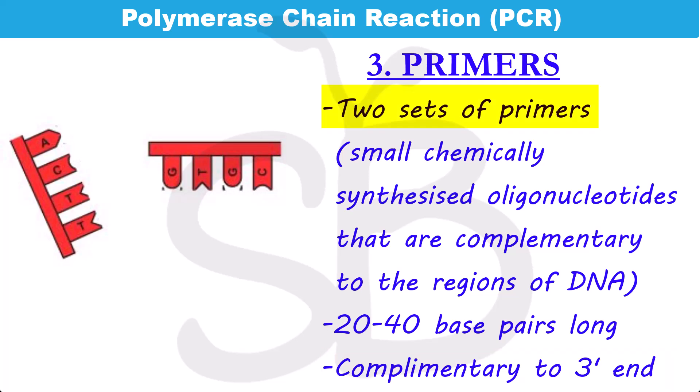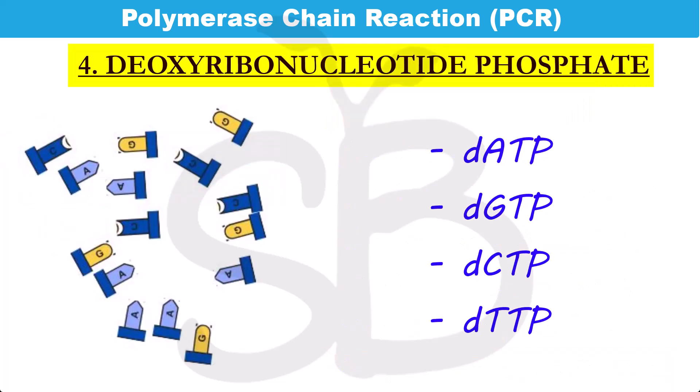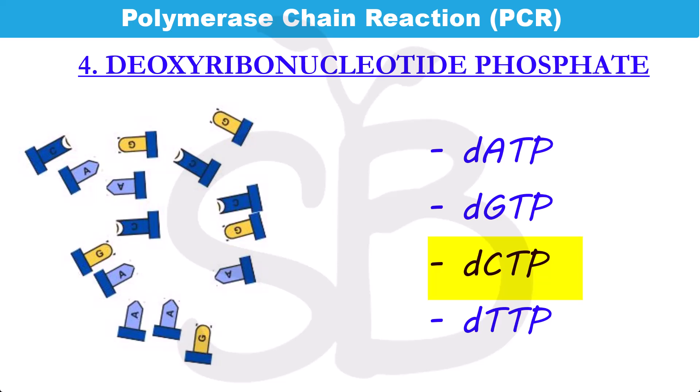We need to use two sets of primers along with deoxyribose nucleotide phosphates — dATP, dGTP, dCTP, and dTTP — which correspond to adenine, guanine, cytosine, and thymine. These are the building blocks of DNA.